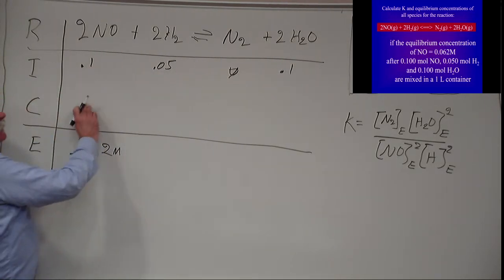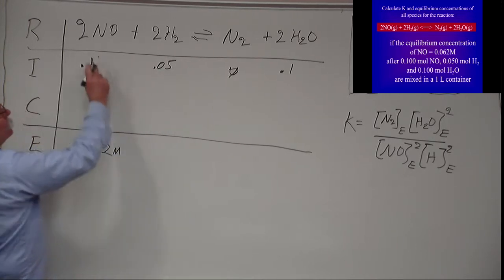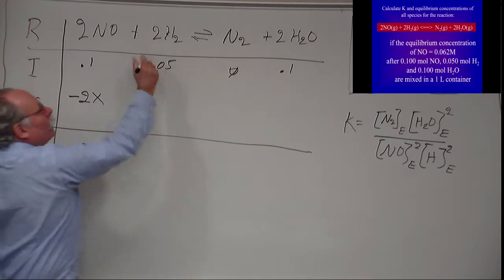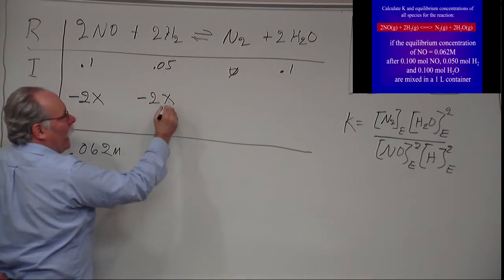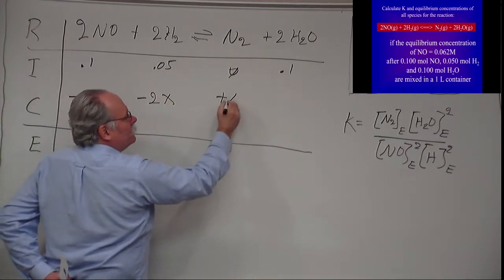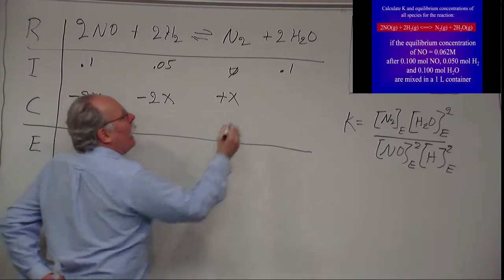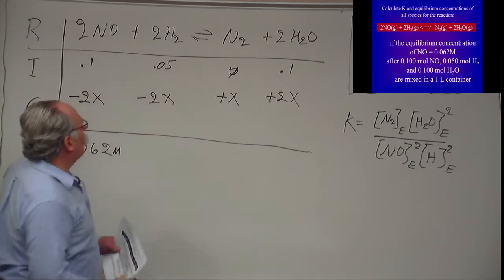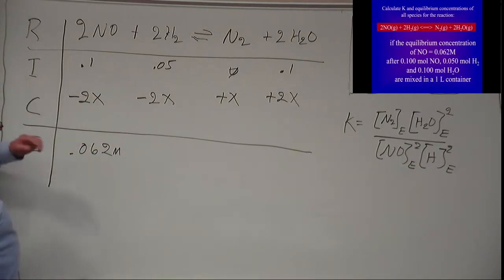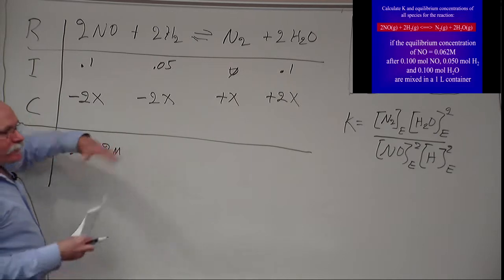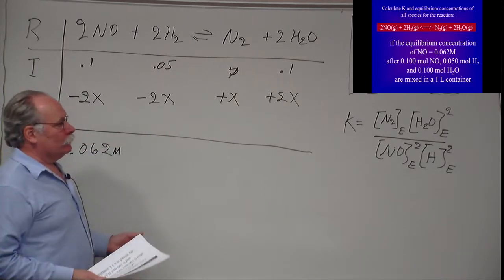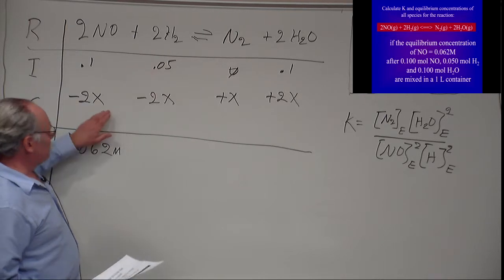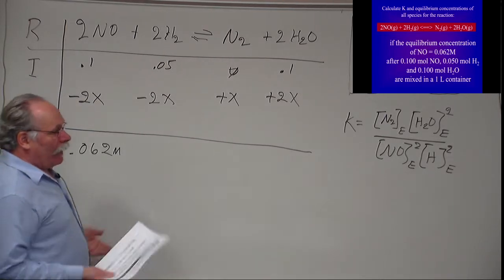Now what we do here is we ask how much is this change, and we look at the proportionality of the changes. So every time two of these react we have a minus 2X, two of these react, one of these is formed, and two of these are formed. So in the change of the RICE diagram, the C, X is the extent of reaction, how far it goes. If we're really close to equilibrium these initial conditions, X is small. If we're very far from equilibrium, X is large.